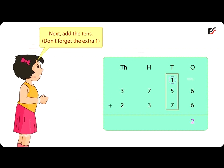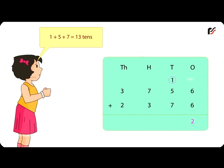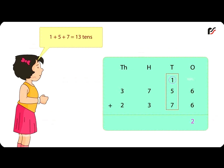Next add the 10's. Don't forget the extra 1. 1 plus 5 plus 7 is equal to 13 10's. Write 3 under 10's column and carry 1 to the 100's column.